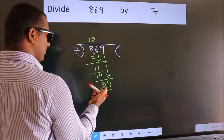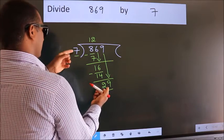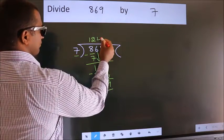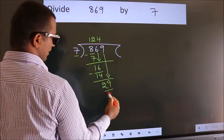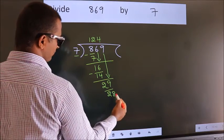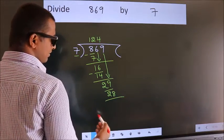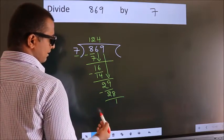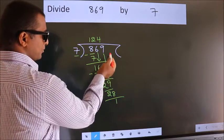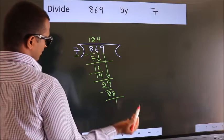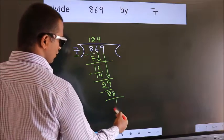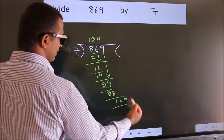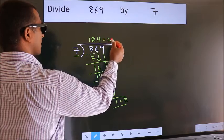A number close to 29 in the 7 times table is 7 fours 28. Now we subtract — we get 1. No more numbers to bring down, so we stop here. This is our remainder, and this is our quotient.